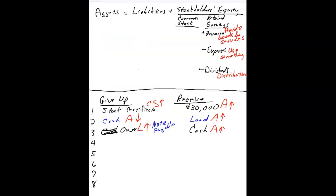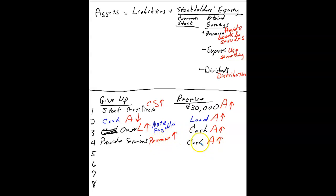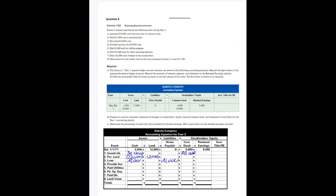Number four: provided services for $20,000 cash. We receive cash and we provide services. Cash is something we own — that's an asset going up. Providing services is revenue, and we have increased our revenue. Cash goes up $20,000, and under retained earnings we record $20,000 of service revenue. That keeps the equation in balance.